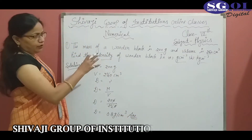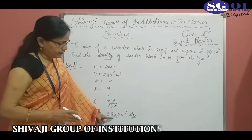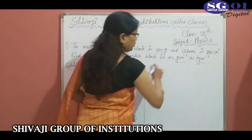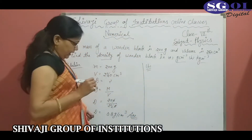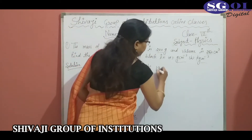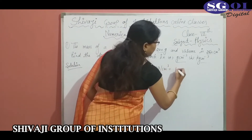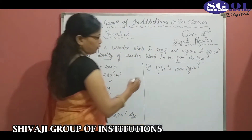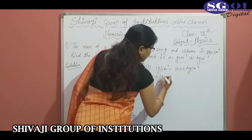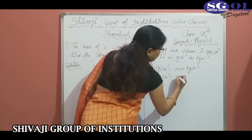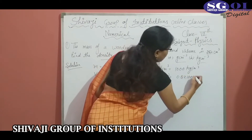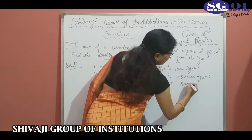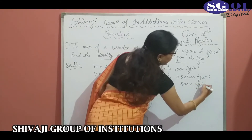So the density of the wooden block is 0.8 gram per cm³. Now, for density in kilogram per meter cube: as we know that 1 gram per cm³ is equal to 1000 kilogram per meter cube. So 0.8 gram per cm³ is equal to 0.8 into 1000. After multiplying, we get 800 kilogram per meter cube.